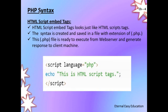The third syntax is the HTML script embed tag, where the coding is stored in a file with the extension .php. Remember the script language tag in JavaScript? Here instead of writing JavaScript you write PHP. So these are the three syntaxes we can use to write a PHP program.